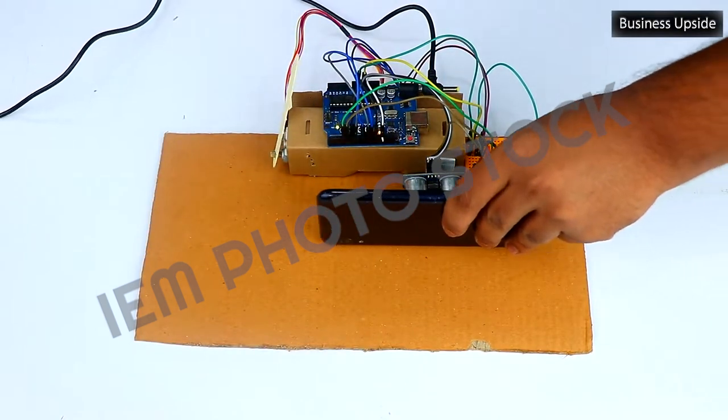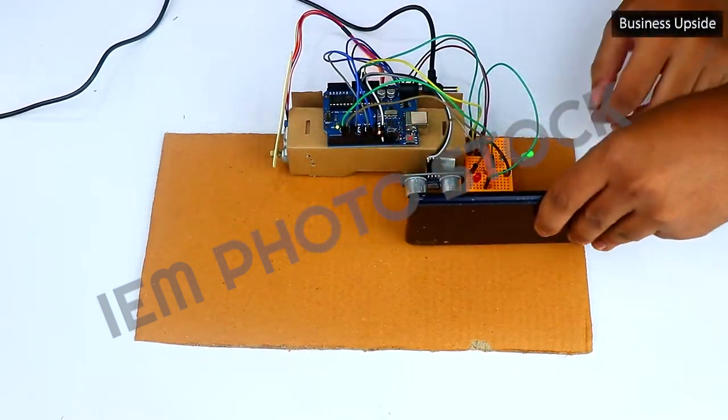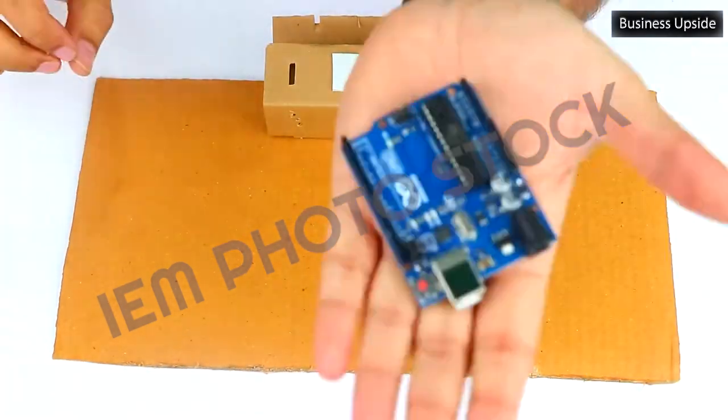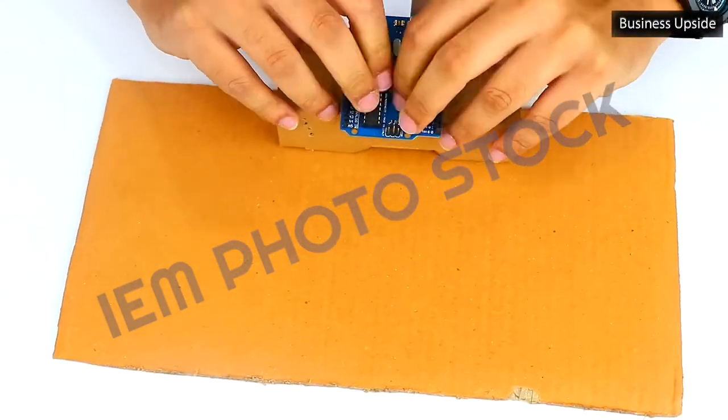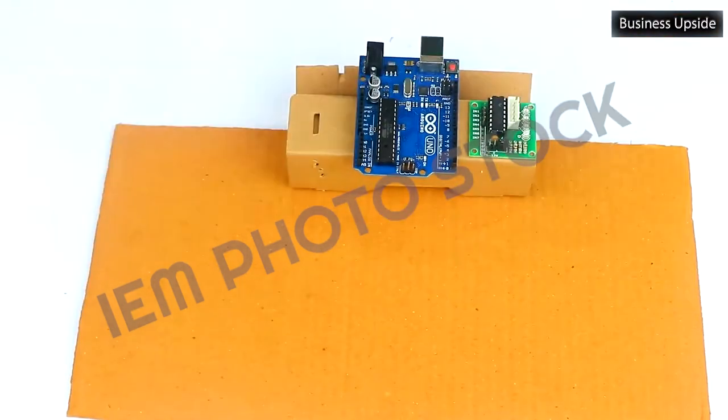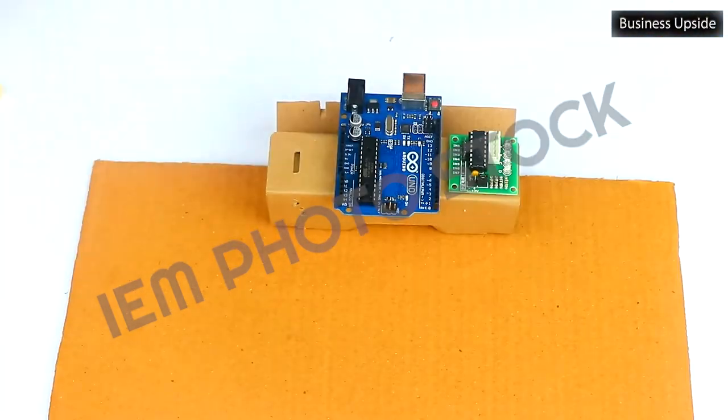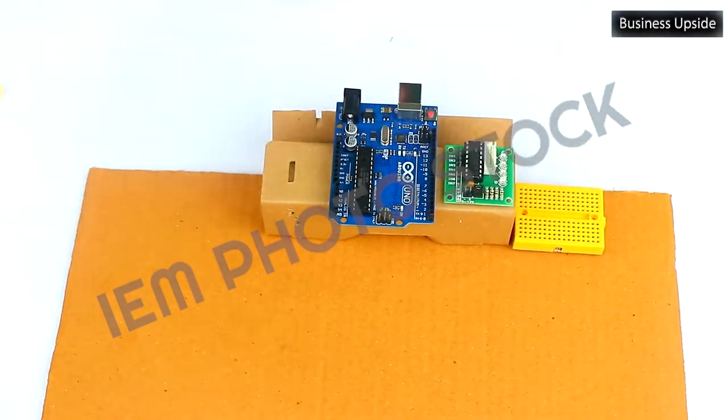See how our system is working. And now, let's get started with the main construction. Place the cardboard on the table to begin construction. This is the Arduino. Let's place it on the cardboard. Place the PCB on the cardboard beside the Arduino. Place the mini breadboard beside the PCBs and let's get started.